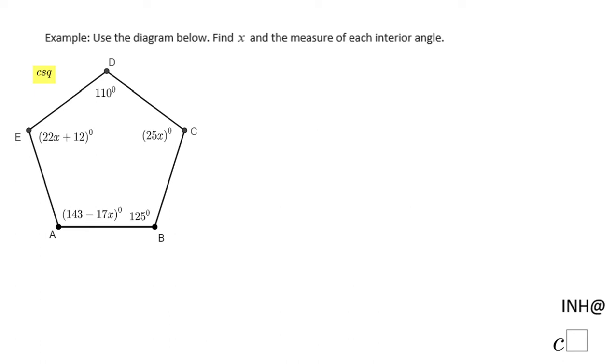Welcome or welcome back. I'm Nhien Hap at C squared. In this example, we have a polygon of five sides: A, B, C, D, E. We need to find the value of x and the measure of each interior angle.